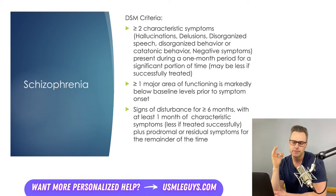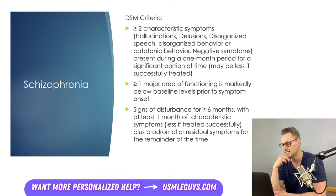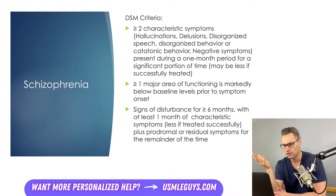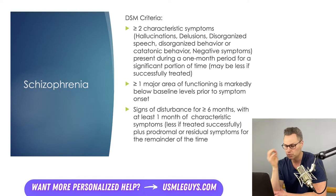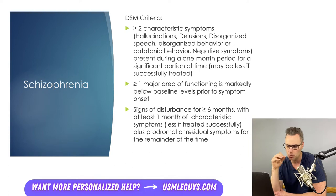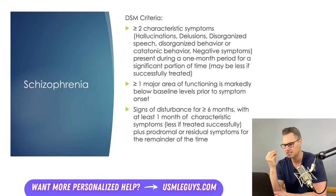Prodromal or residual symptoms manifest as less severe versions of the characteristic symptoms. For example, if a patient was having delusions about aliens kidnapping people, they may still believe aliens exist on earth but are no longer barricading themselves at home. Or if they were previously hearing voices with clear instructions, they may now hear only muffled whispers. These prodromal or residual symptoms can manifest as only negative symptoms, or two or more characteristic symptoms including hallucinations, delusions, disorganized speech, disorganized behavior, or catatonic behavior.